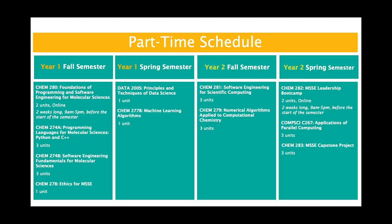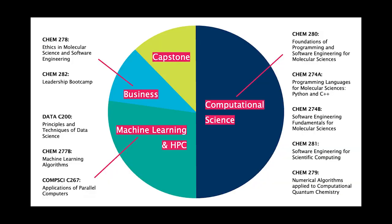The courses are designed to accommodate working professionals. The degree consists of 29 credits and 11 courses. As a rough breakdown, the curriculum spends about 50% of its coursework covering computational science, about a third on machine learning and high-performance computing, and the rest is split between courses on leadership, entrepreneurship, ethics, and a capstone project.